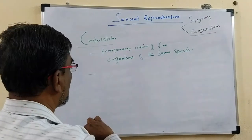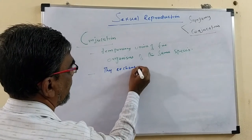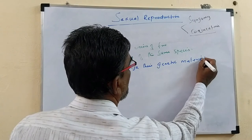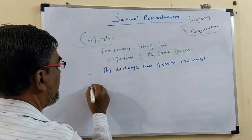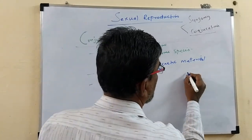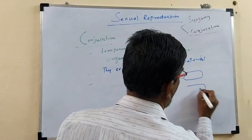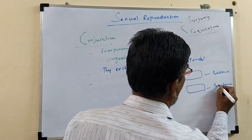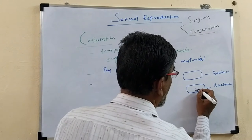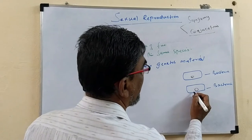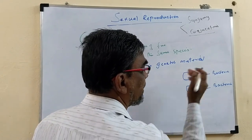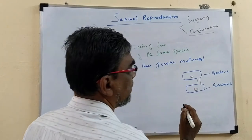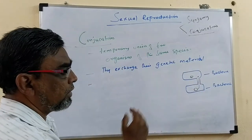They exchange the genetic material. For example, this is one bacteria and this is another bacteria. This bacteria has genetic material, and here also there is some genetic material. This bacteria is called the donor, and the bacteria which receives the genetic material is called the recipient. A connection will occur, and through this connection the genetic material enters into the other bacteria. This process is called conjugation.